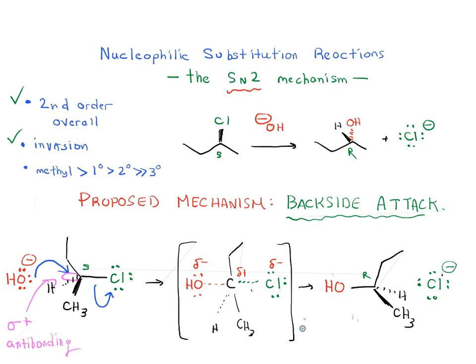Now, finally, why does it matter if we have a methyl group or primary? Why would it be faster for methyl versus primary, secondary or tertiary? Well, so our backside attack is occurring against this tiny little antibonding orbital, the sigma star orbital.